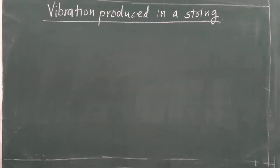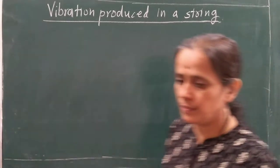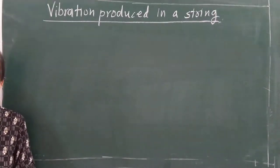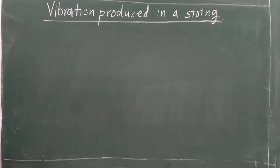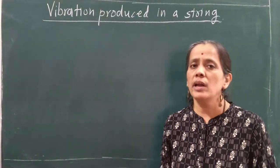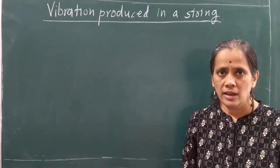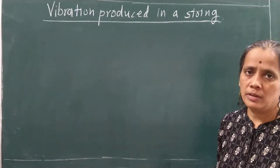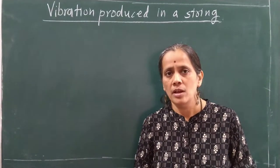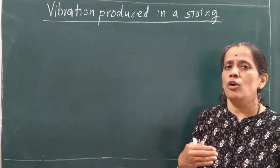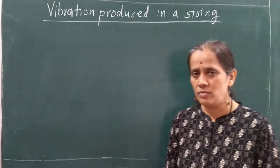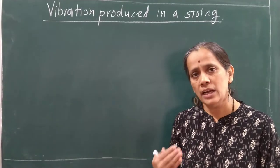Today we are going to see the topic of vibration produced in strings. In the previous two lectures, we have seen the vibration of air column when the pipe is open at one end and closed, and also when the pipe is open at both ends. During that vibration of air column, the sound wave reflects from either the open end or closed end, forming a longitudinal stationary wave in the form of nodes and antinodes.